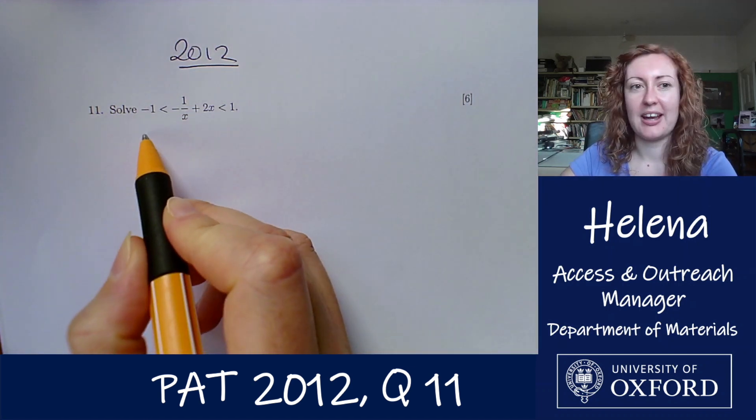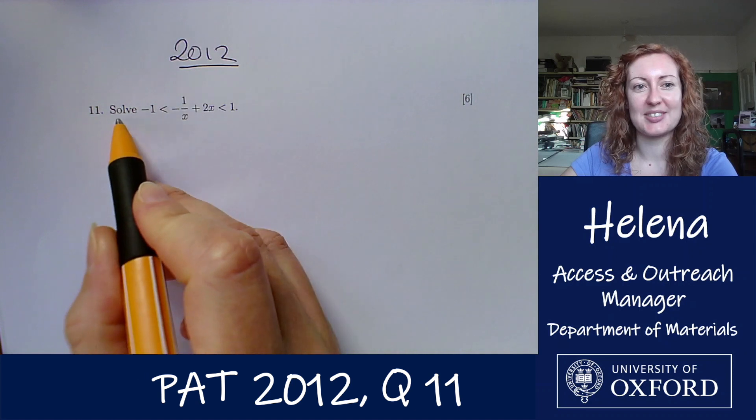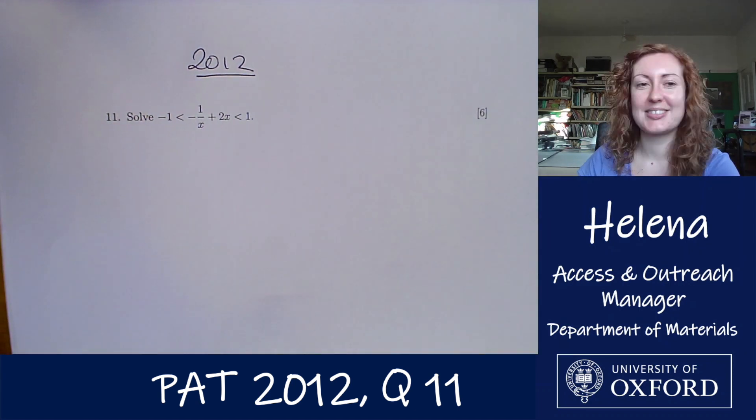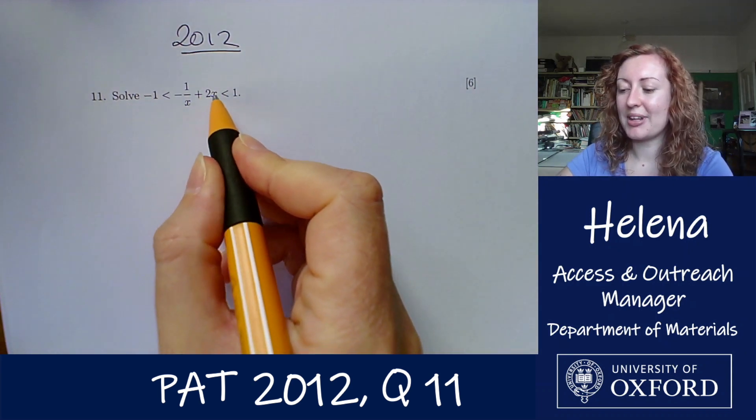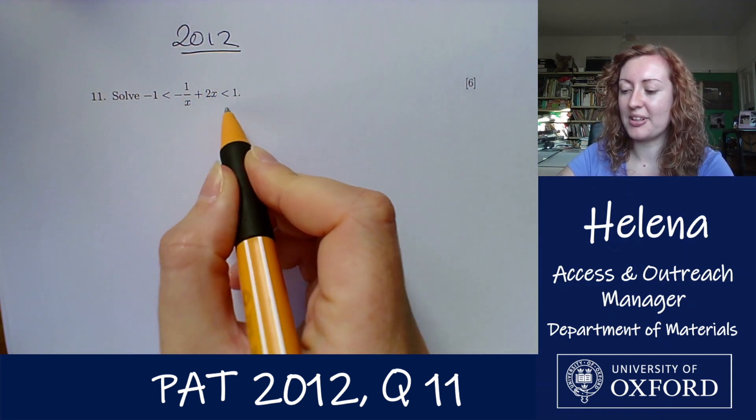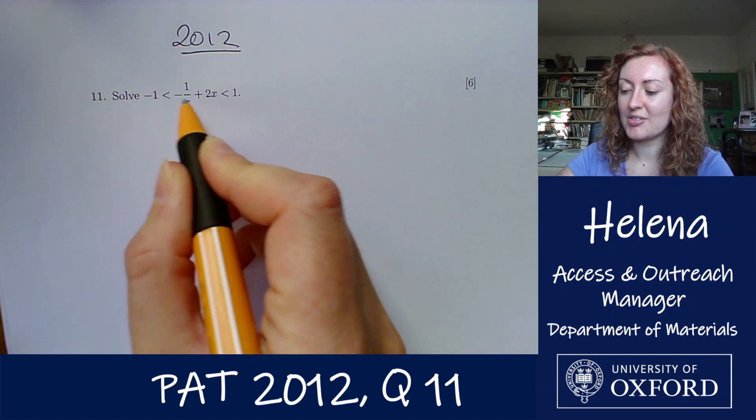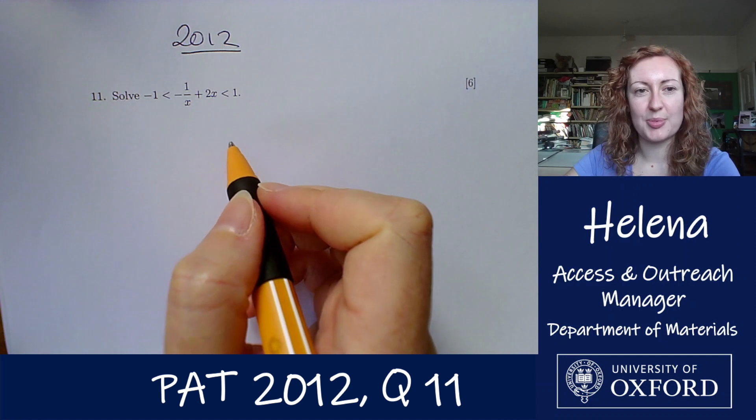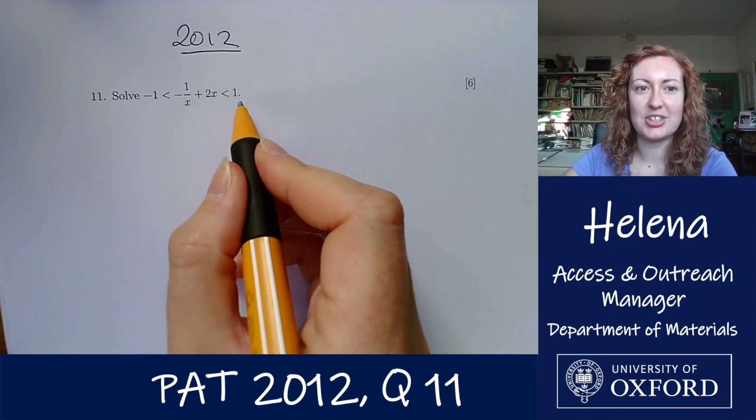So here we have a question and it simply says solve this inequality here. So how are we going to go about that? We can see that we have our inequality for x sandwiched between two boundary values. So what we're going to do to help us solve this is we're going to take each side separately.